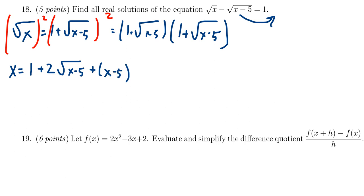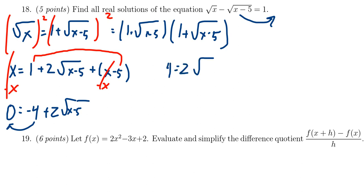So my recommendation here is going to be combine like terms. Let's subtract x from both sides. And then we have this negative 5 plus 1. In that situation, the x's are actually going to cancel each other out. We have then 0 is equal to negative 4 plus 2 times the square root of x minus 5. Let's move the negative 4 to the other side. So we end up with 4 is equal to 2 times the square root of x minus 5.